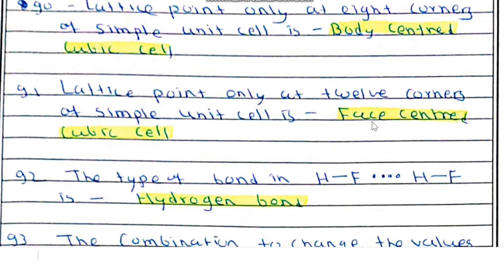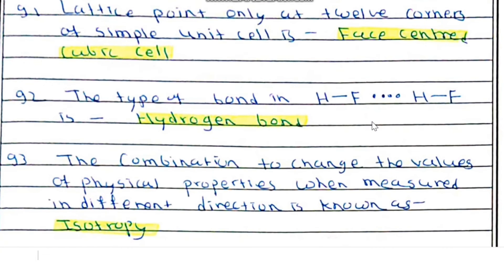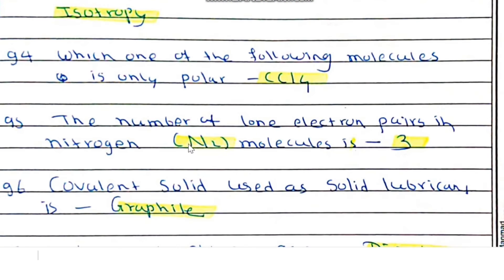When lattice points are at the corners and face centers, it is known as a face-centered cubic (FCC) cell. The type of bond in HF is a hydrogen bond, shown by a dotted line. When physical properties have different values when measured in different directions, it is known as anisotropy.